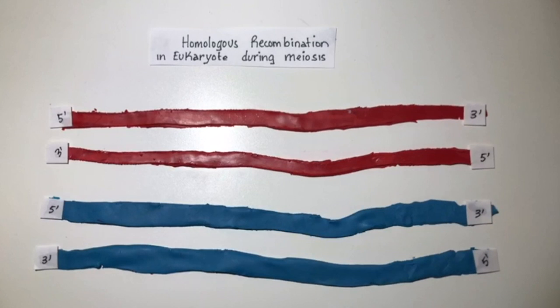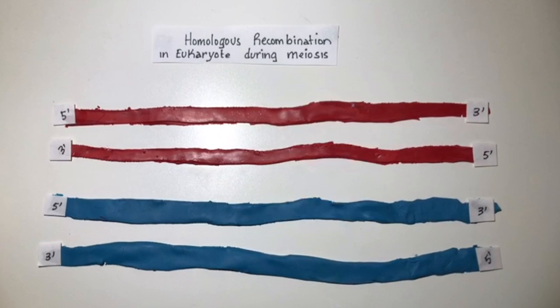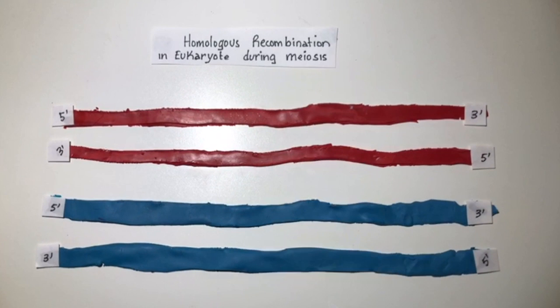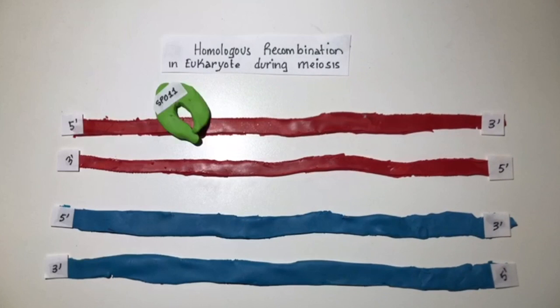Recombination must be complete before the first nuclear division in order to allow the homologs to properly align and then separate. In the absence of recombination, chromosomes often fail to align properly for the first meiotic division and this results in chromosome loss.